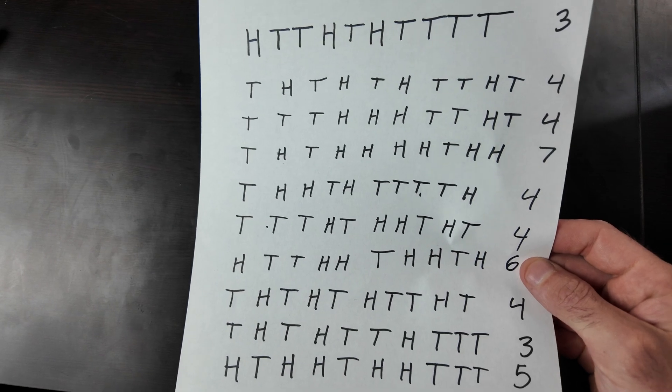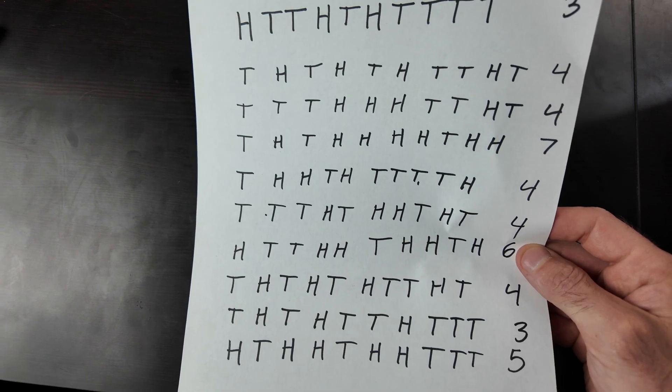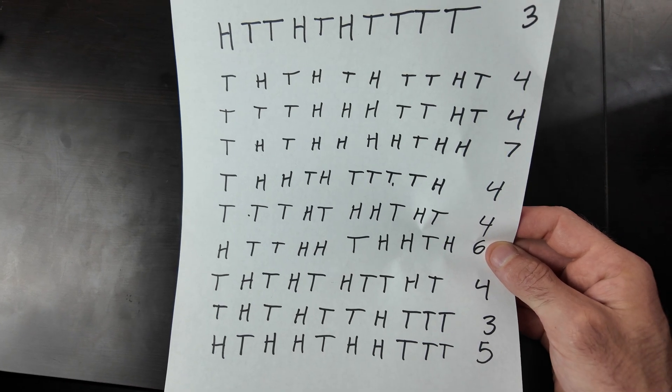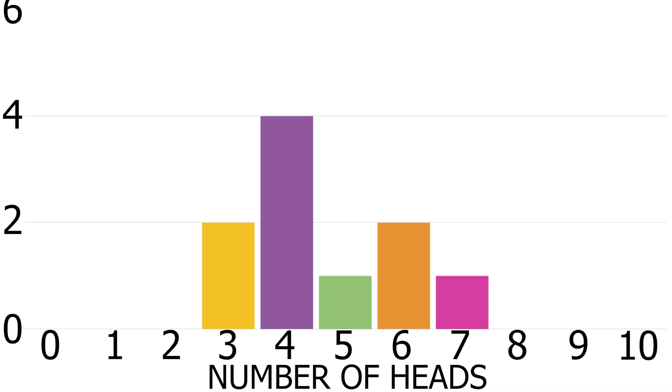I'm really not getting any patterns here. In fact I only got five heads one time. All these results just look random, like chaos. Let's graph how many times I got heads on each one and see if we can get some kind of pattern here.